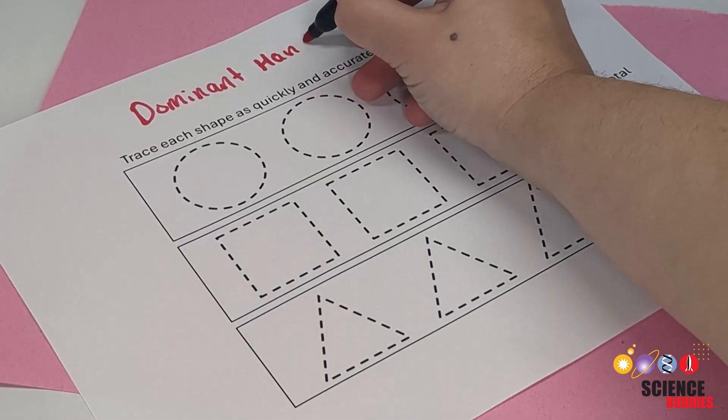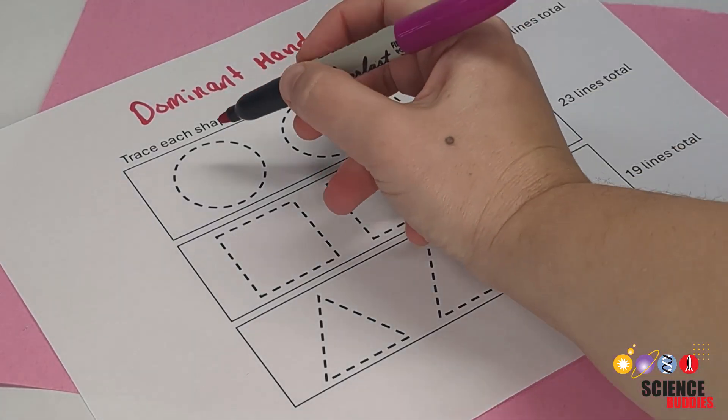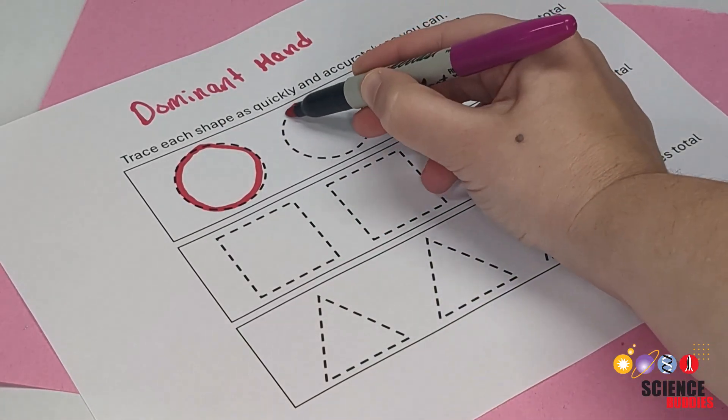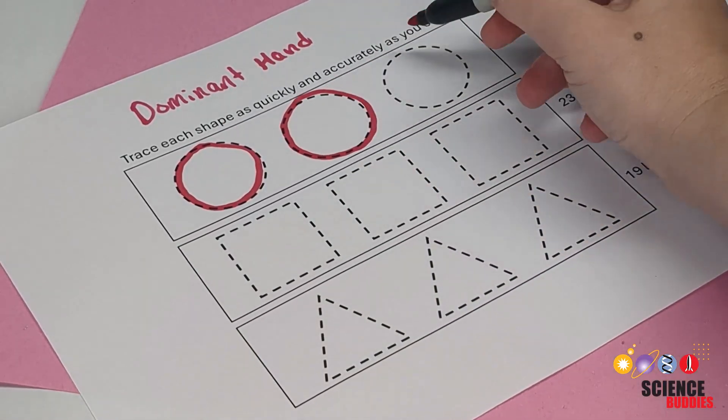To model normal gravity, you'll trace each shape with your dominant hand. To do this consistently, make sure to trace each shape as quickly and accurately as possible.